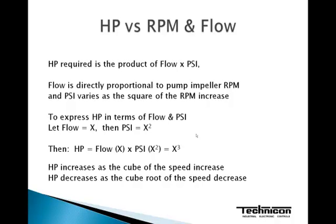So to express horsepower in terms of flow and PSI, let's let X equal flow. If that's the case, then we can express PSI as X squared. And as we said at the top of our formula, horsepower is actually flow X times PSI or X squared, so the product equals X cubed.